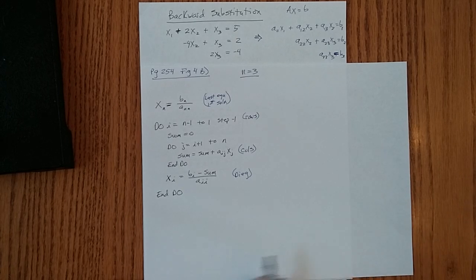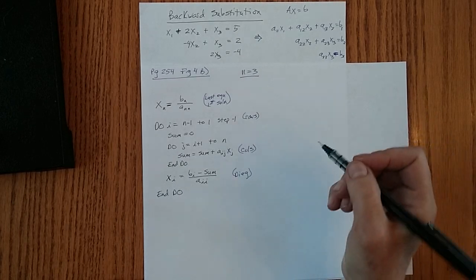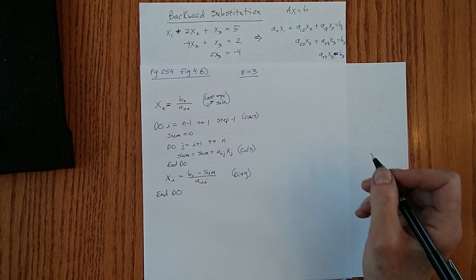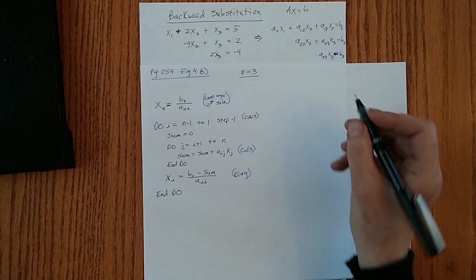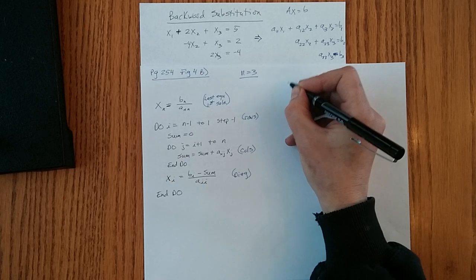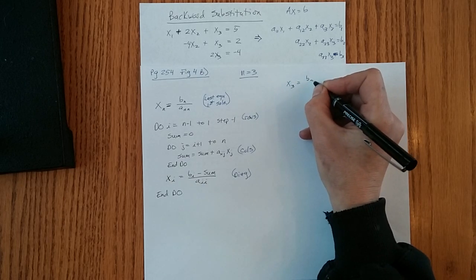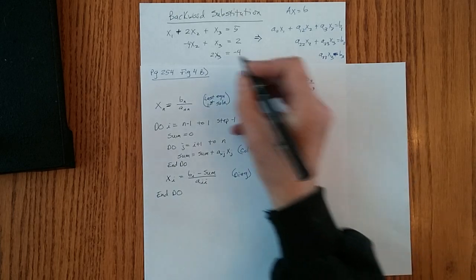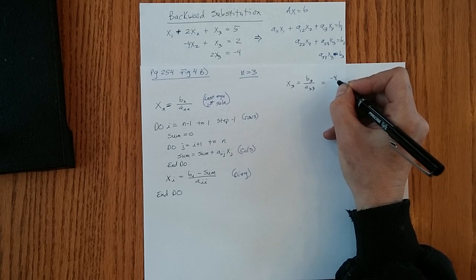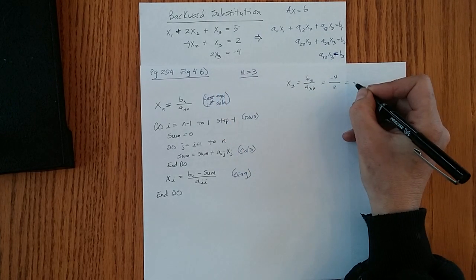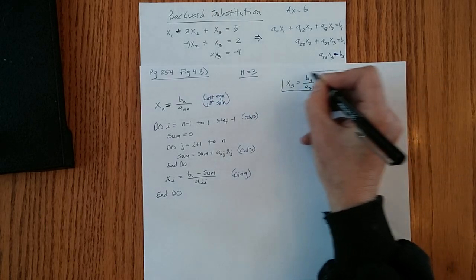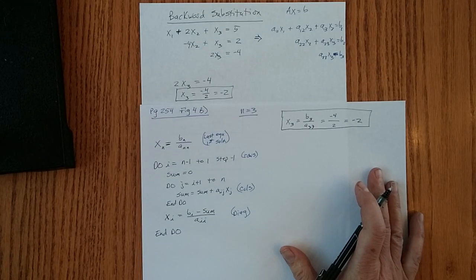So let's go step-by-step through the code to solve our system of equations and make sure it works and makes sense. So we know n equals 3. So this first line is x sub 3 equals b sub 3 over a33. Right here. So that is b sub 3 is minus 4, a sub 3,3 is 2. x sub 3 is minus 2. Our first solution, just like our first solution by hand.